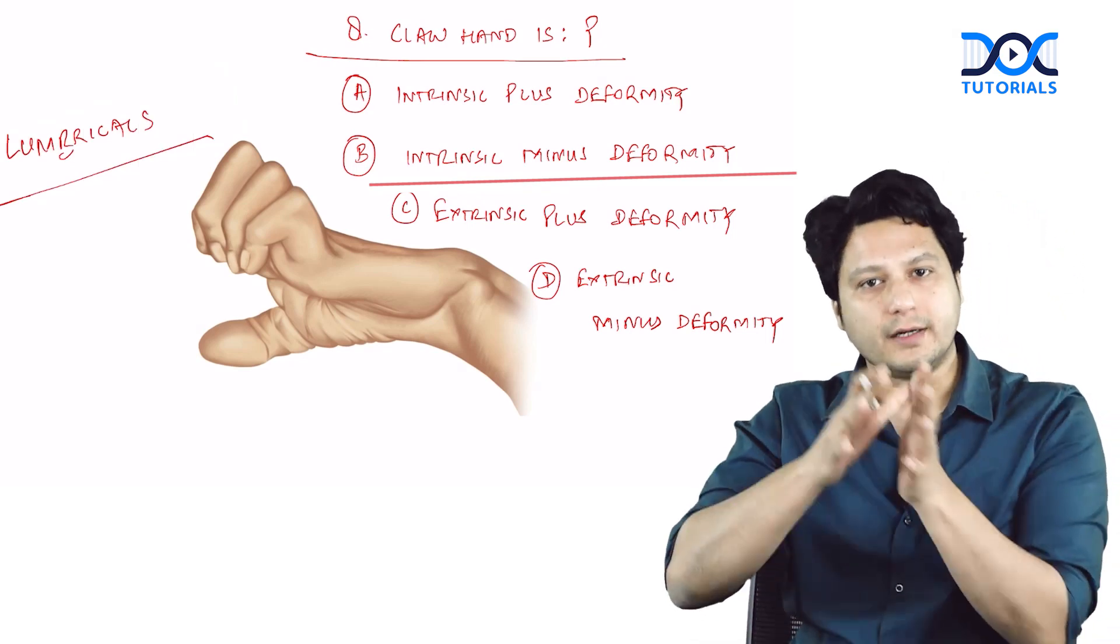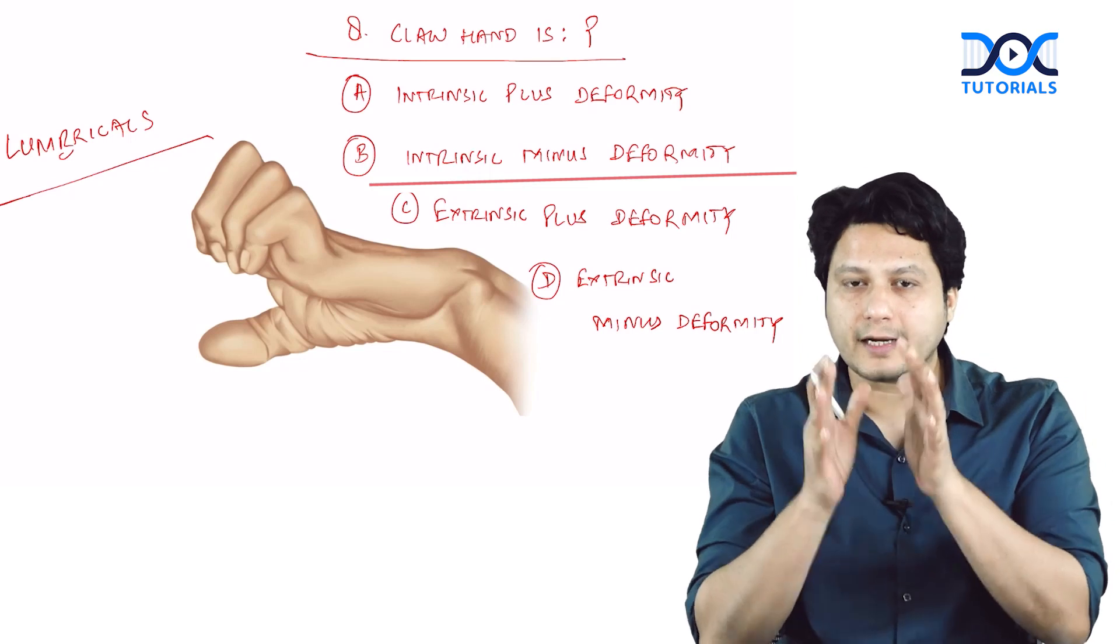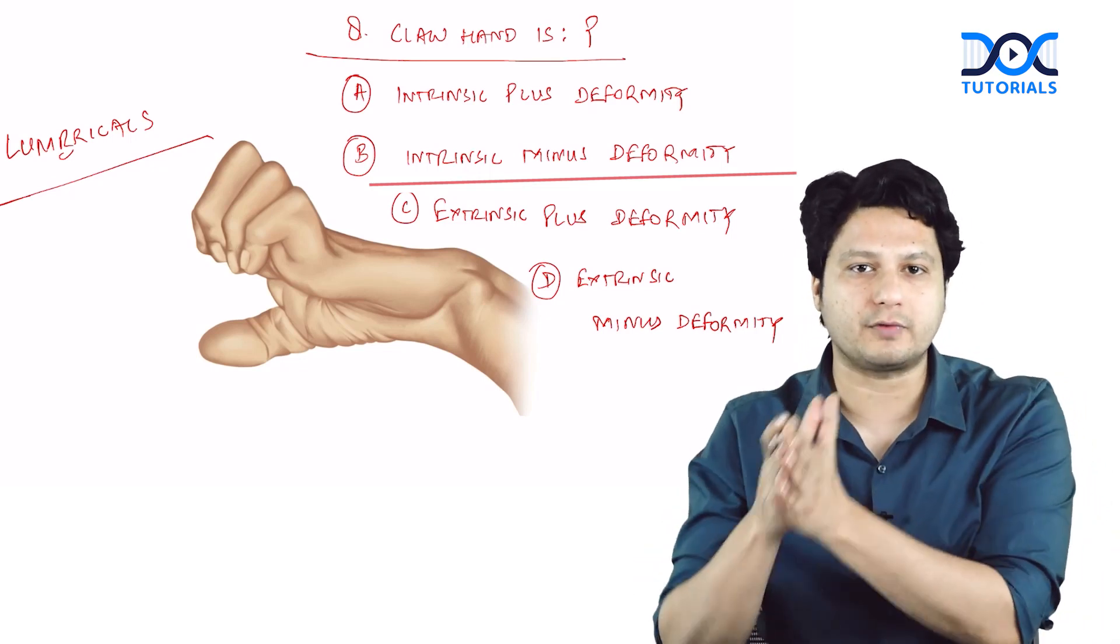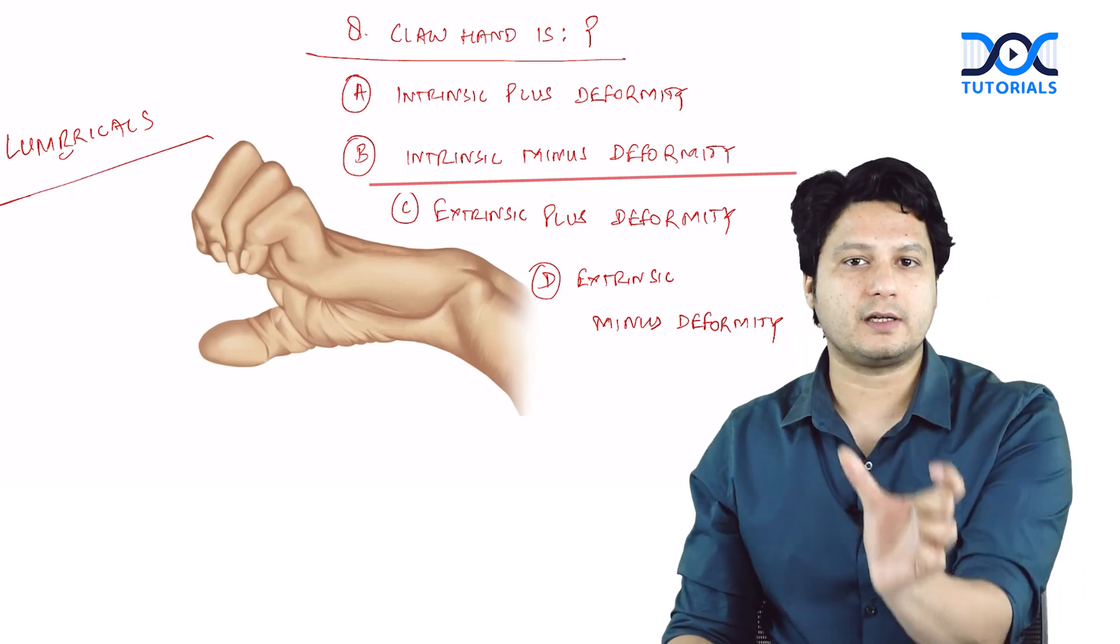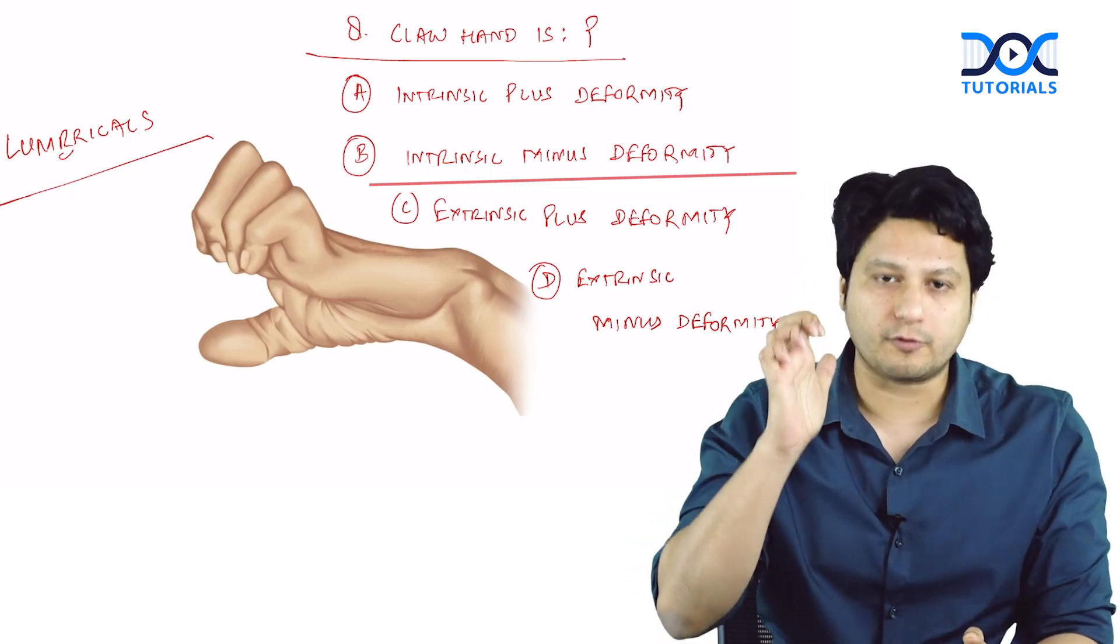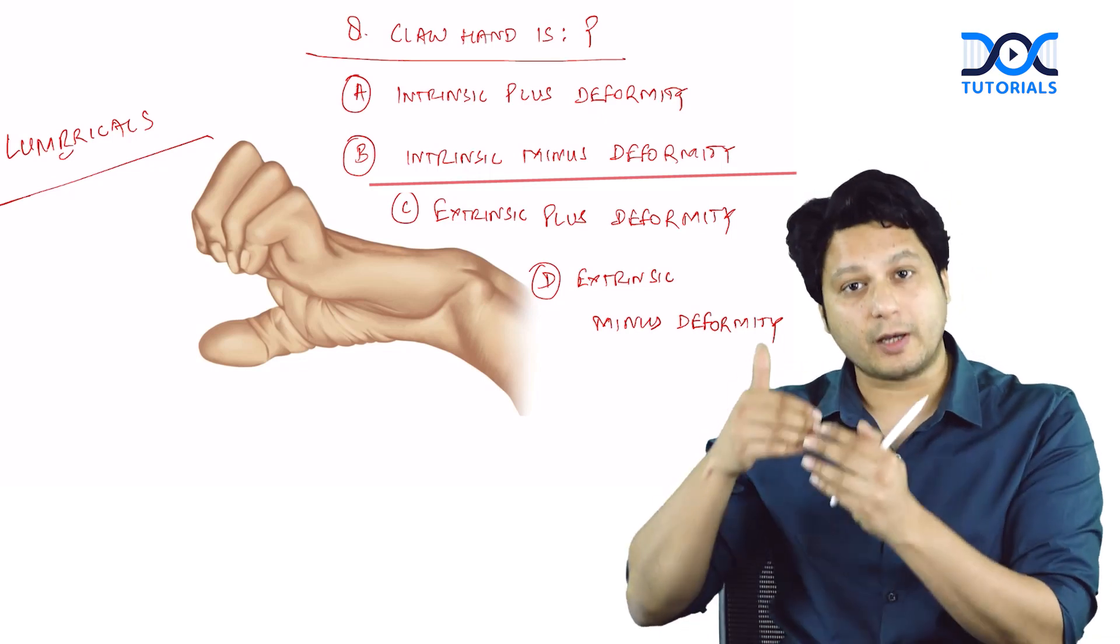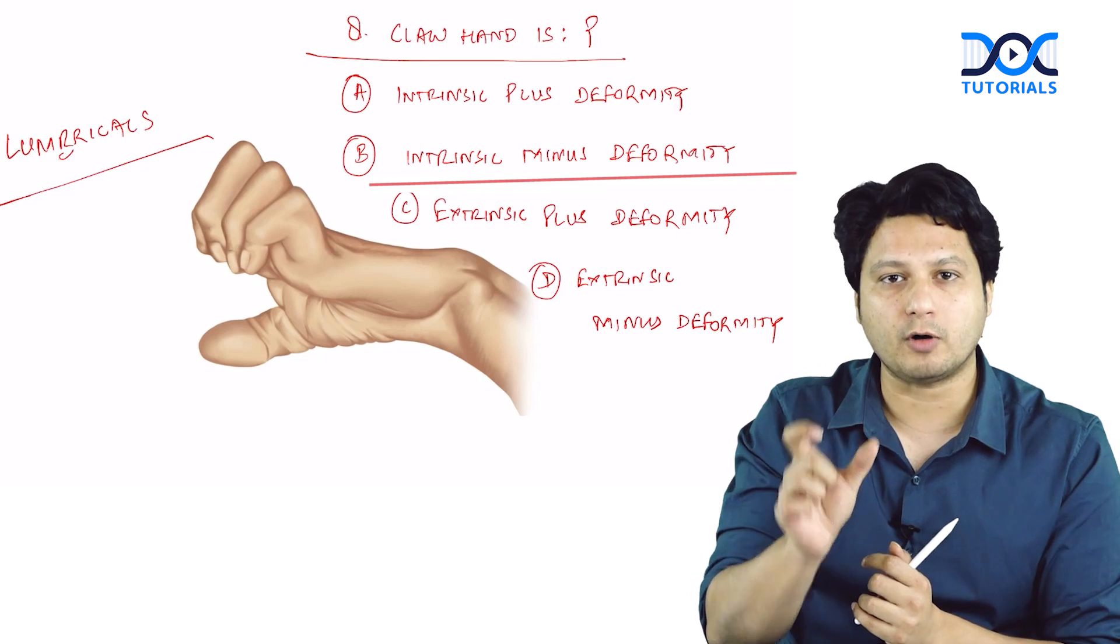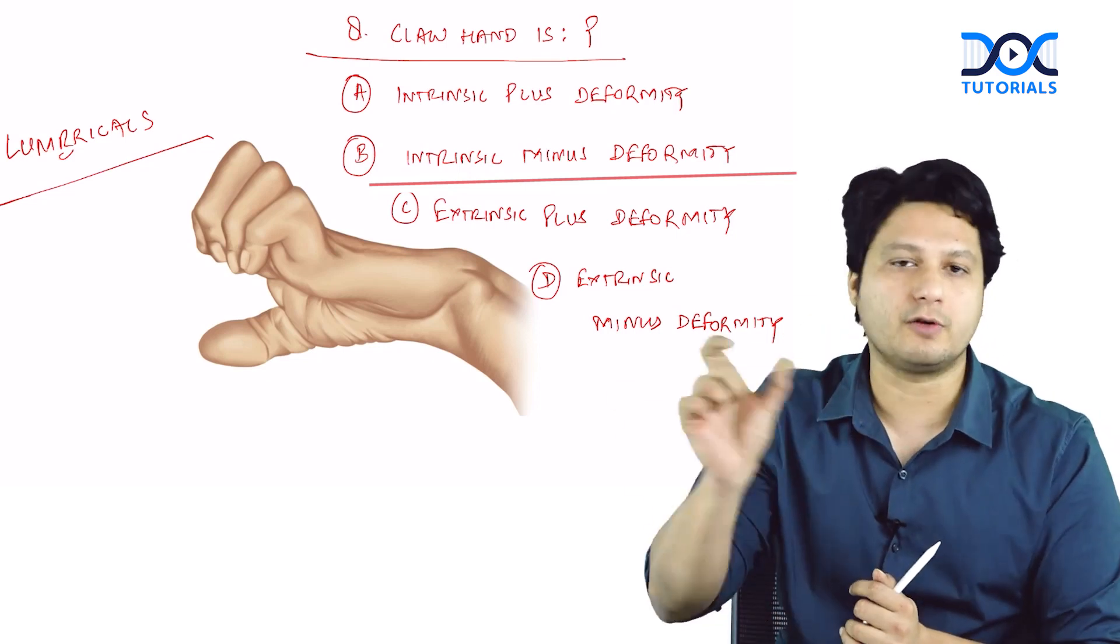Lumbricals are intrinsic muscles of the hand. They are a set of muscles that take origin and insert within the confines of the hand. If this set of muscles is inactive, the hand will take the shape of a deformity, and this deformity is because of the lack of this set of intrinsic muscles. That's why it's called intrinsic minus deformity.